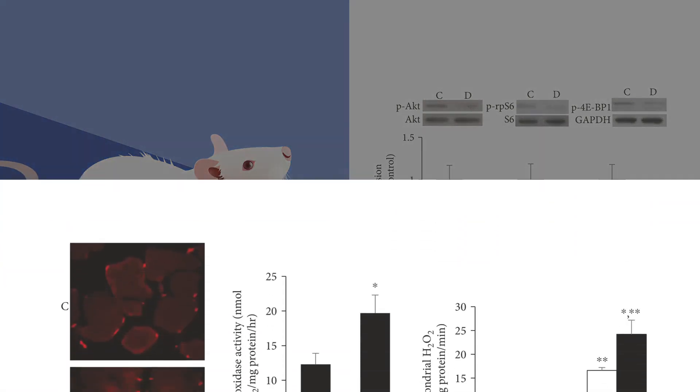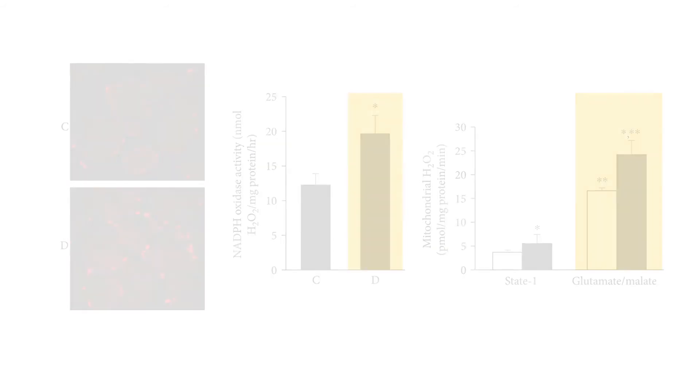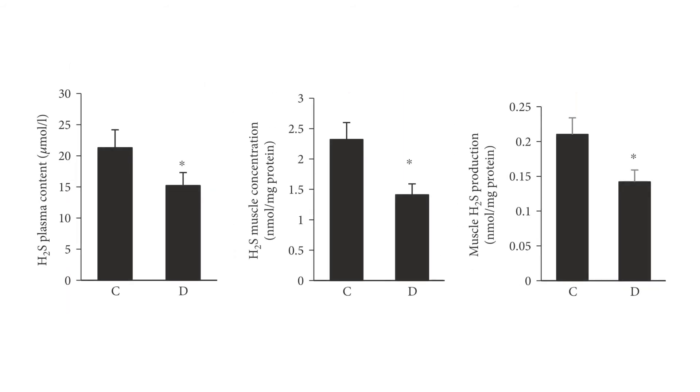But the story isn't over. The authors also suggest that the rate of this muscle degradation increased due to lower levels of oxygen in the body. Diabetic rats showed a higher level of harmful reactive oxygen species, along with significantly lower levels of hydrogen sulfide, which helps regulate those reactive oxygen species to maintain oxygen levels in the body.